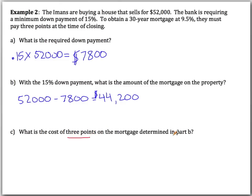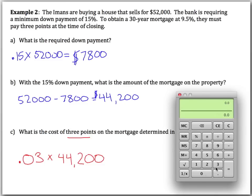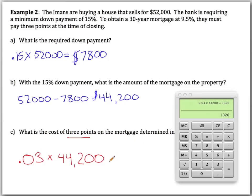Next, we find the cost of three points on the mortgage. For three points, we take 3% — which is 0.03 — of the mortgage amount of $44,200. That calculation gives us $1,326, which would need to be paid in escrow before you could even get your mortgage.